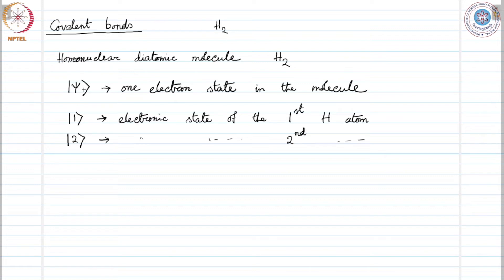Since we are interested in the ground state of the molecule, we assume that one and two are the ground states of the corresponding atom, that is 1s states in case of hydrogen atom. If the energy of these electrons in the hydrogen atom is epsilon, this is the atomic energy of those electrons.